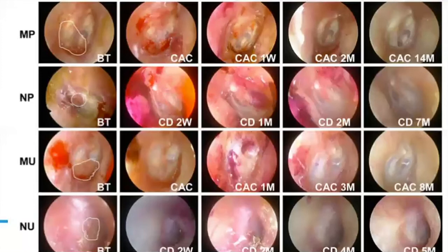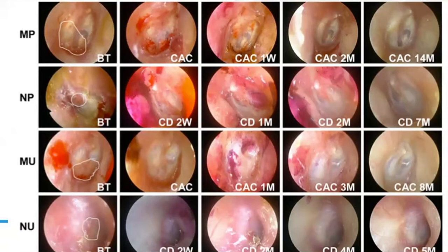This series of photos from Kim's original 2011 paper illustrates the subtypes of granular myringitis and documents response to treatment with Castellani solution over time. The first row (MP) illustrates the marginal polypoidal type, the second row (NP) the non-marginal polypoidal type, the third row the marginal ulcerative type, and the fourth row (NU) the non-marginal ulcerative type. The subsequent columns correlate with the response to treatment over time.